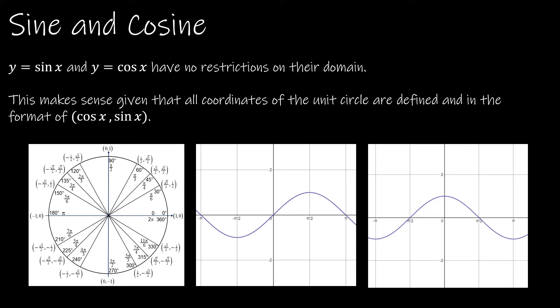So for sine and cosine, there are no restrictions on the domain. You can see that here by looking at sine of theta and cosine of theta, and the actual functions that are graphed. But you can also look at the unit circle. We know that all of the coordinates of the unit circle are cosine of x, comma, sine of x, or theta. It doesn't matter if you use x or theta. As you can see, all of the values on the unit circle are defined. You never see anything that says 0, comma, undefined. All of those values are defined.